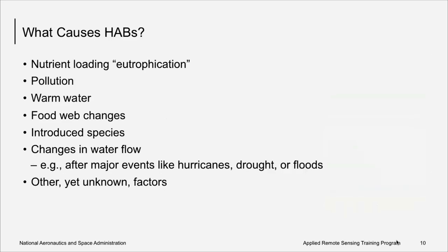We discussed potential causes of HABs. Phytoplankton growth is driven by light, nutrients, and temperature. Perturbations in these abiotic factors, as well as others, can lead to harmful algal blooms. These include nutrient loading or eutrophication, pollution, warm water events, food web changes such as the loss of a key grazer, introduced species, changes in water flow from hurricanes, drought, or floods, and also yet unknown factors.